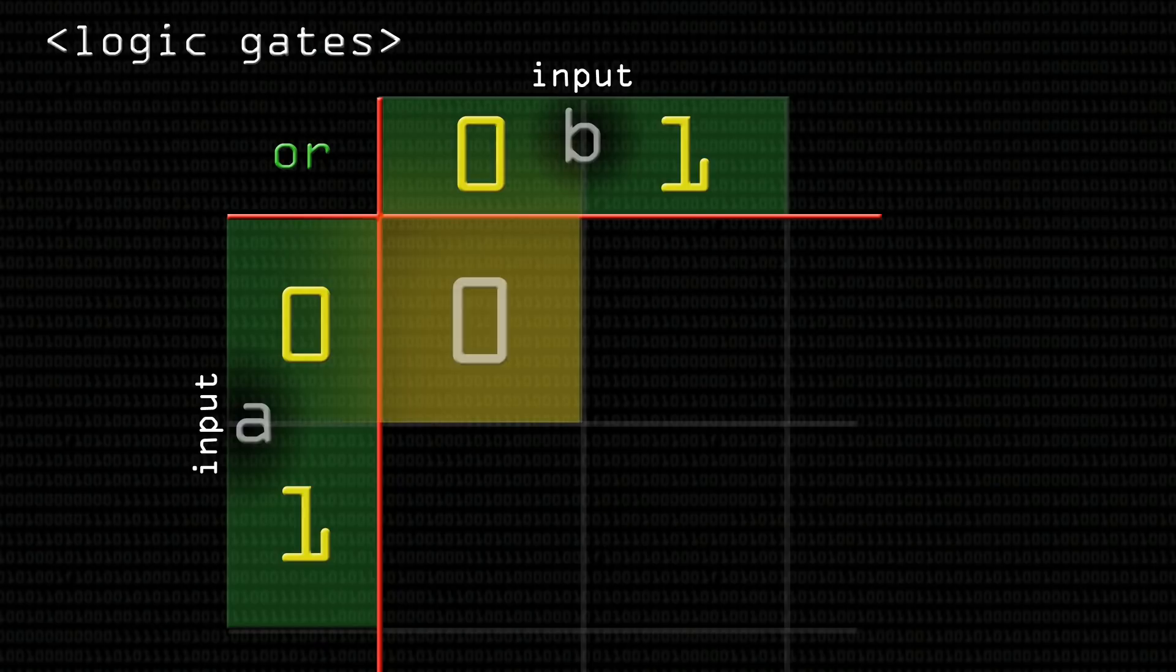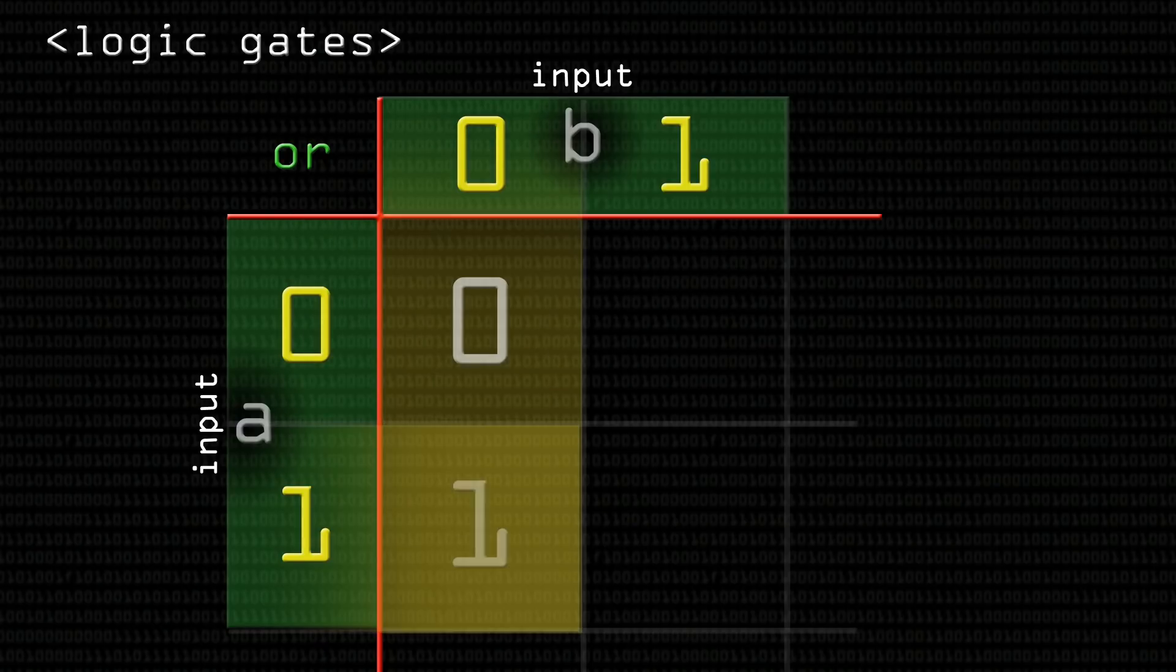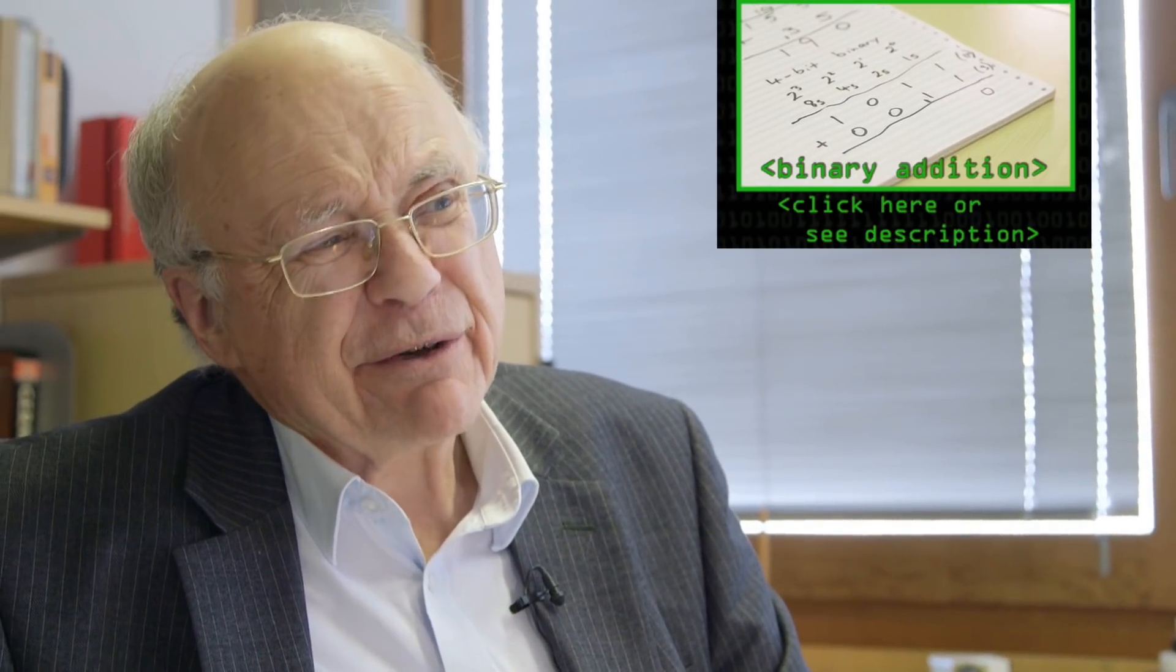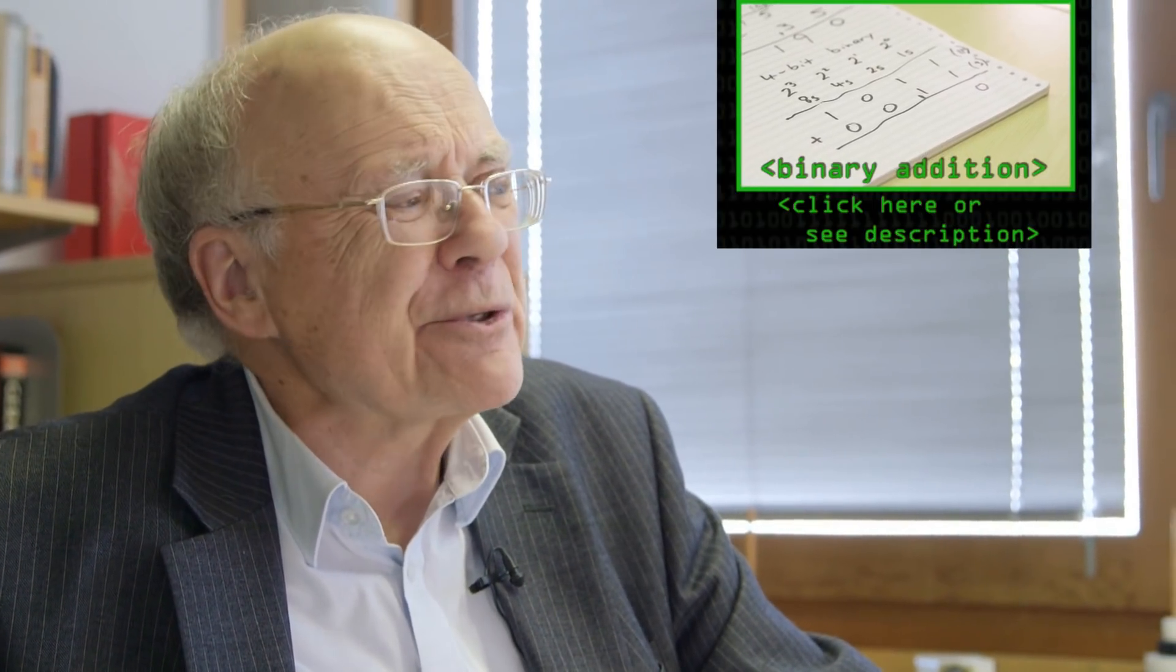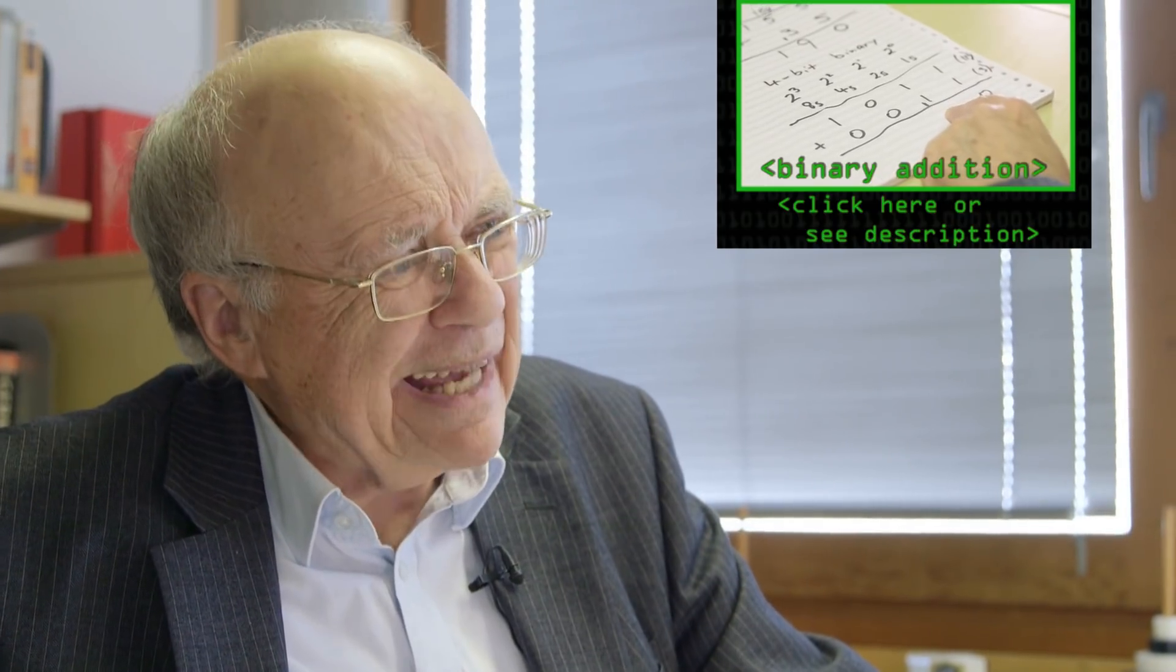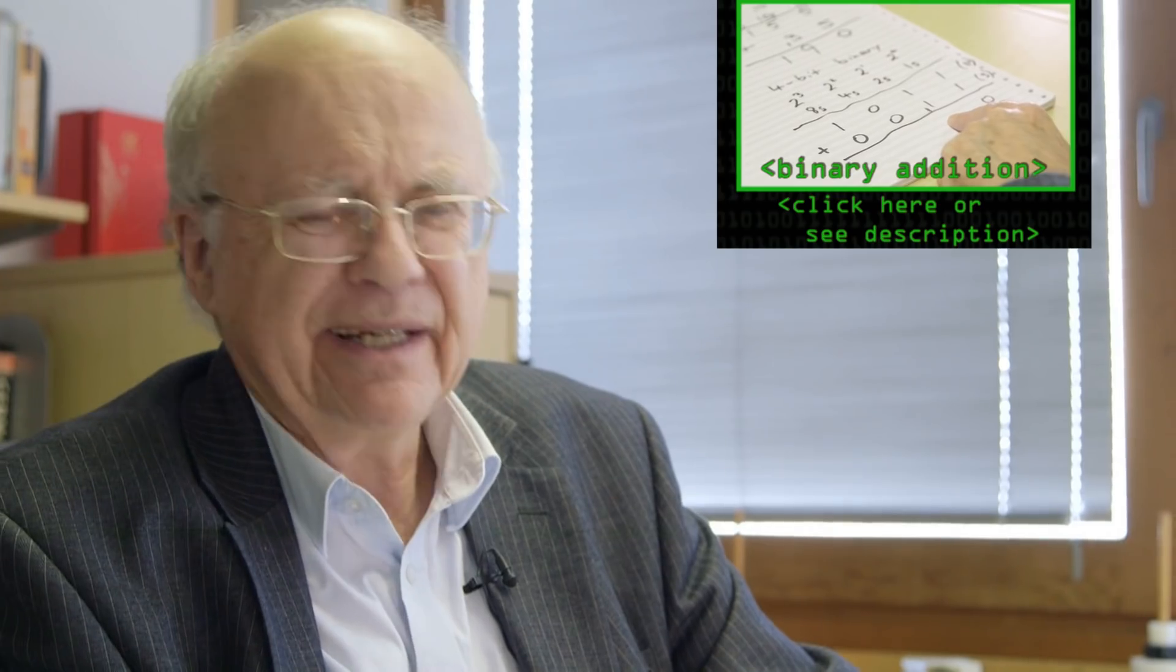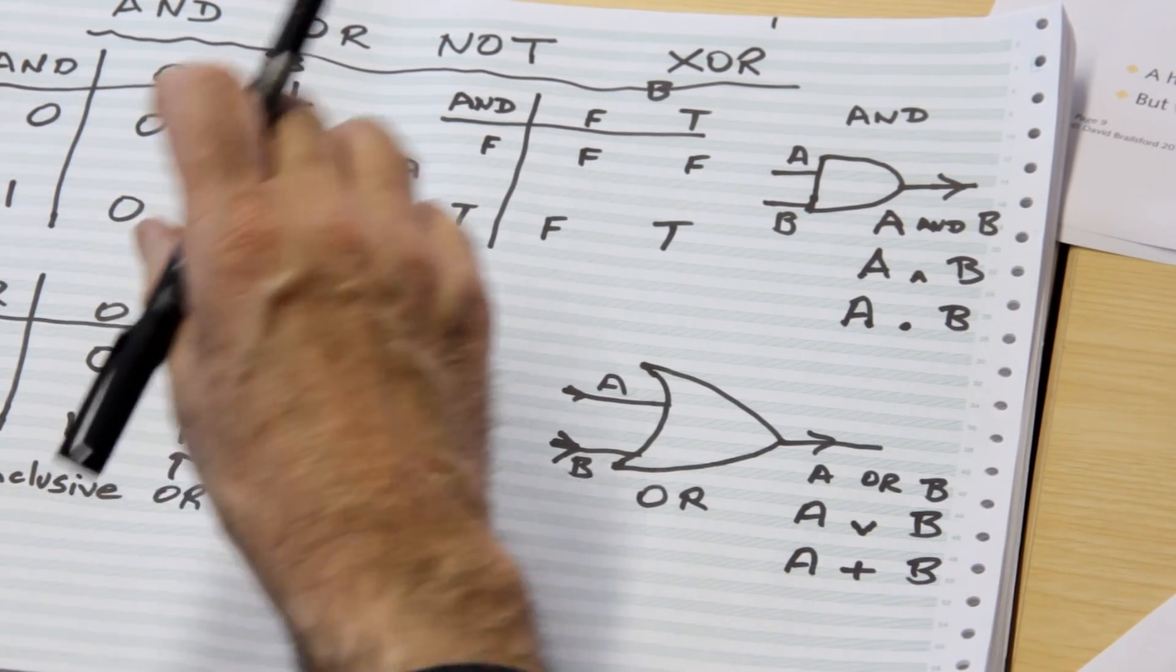I mean, look at it. 0 plus 0 is 0. 0 plus 1 is 1. 1 plus 0 is 1. 1 plus 1, ah! Really, referring back to the binary adder video I did a week or two ago, 1 added to 1 should really put down a 0 and carry a 1. But here it's as if the carry bit's retained and held inside.